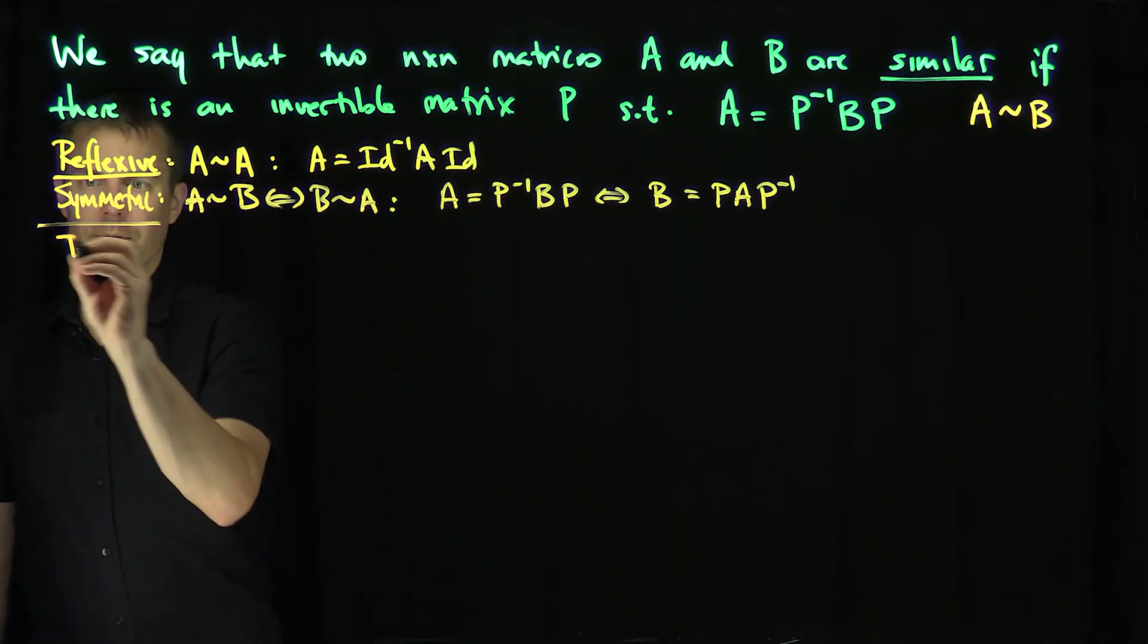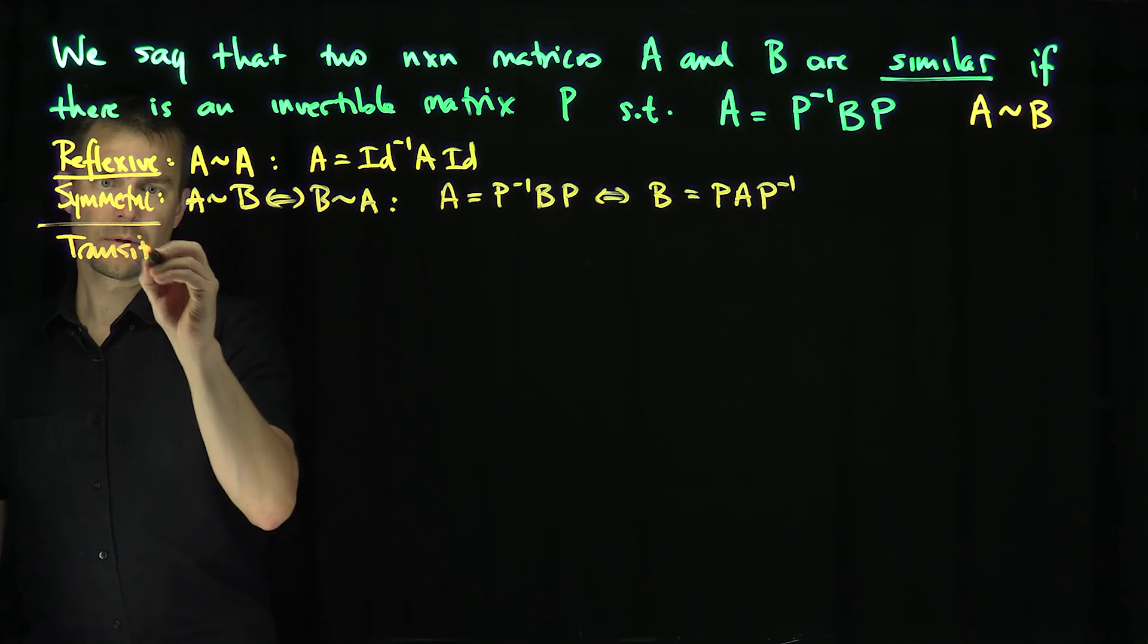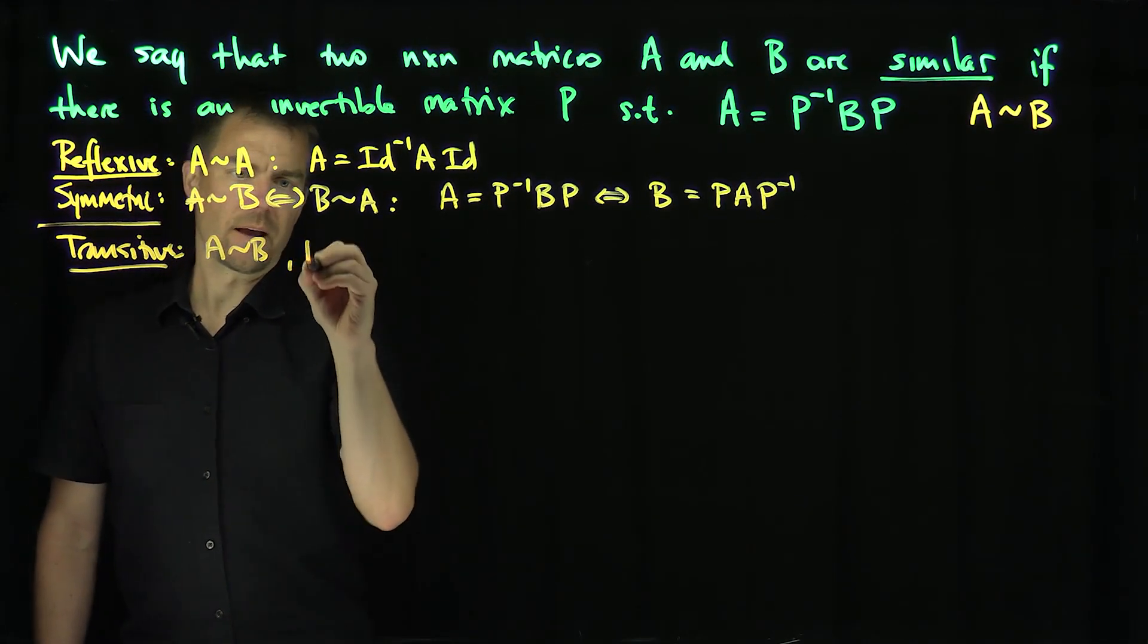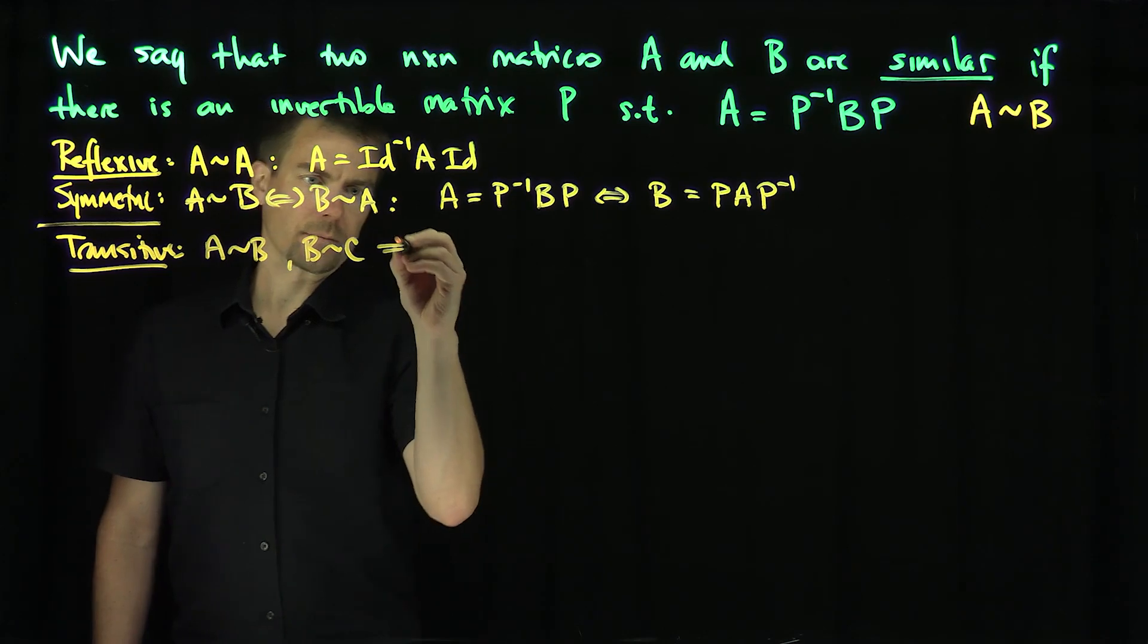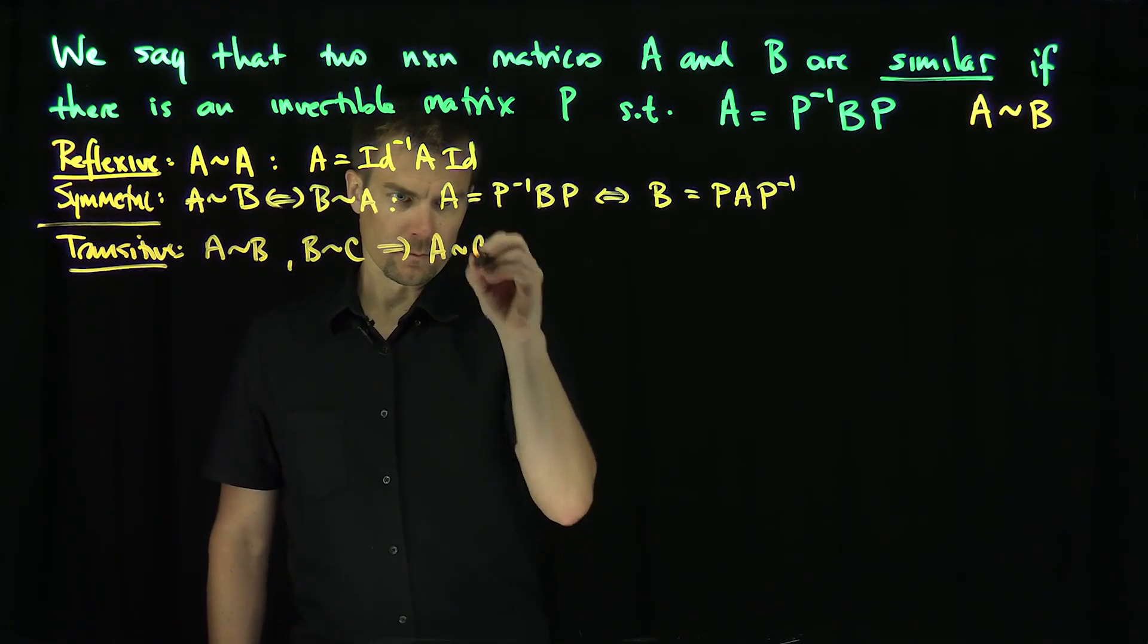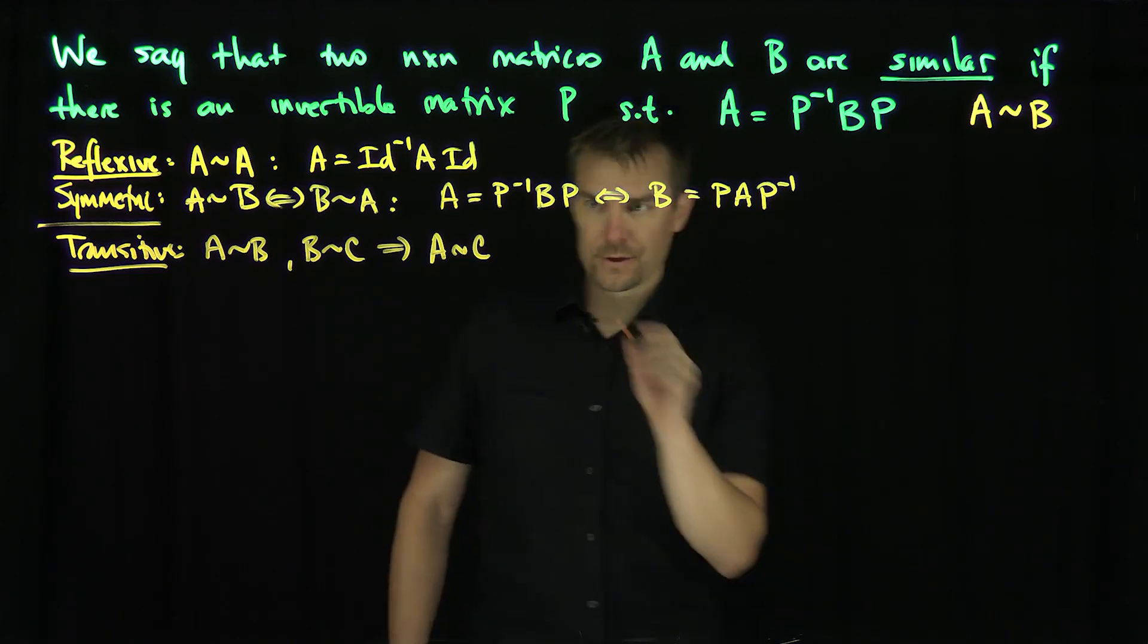And finally, it's transitive. So if A is similar to B and B is similar to C, then A is similar to C. How does this get proven?